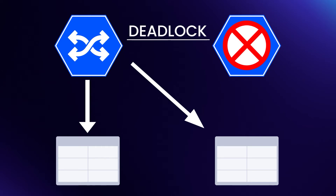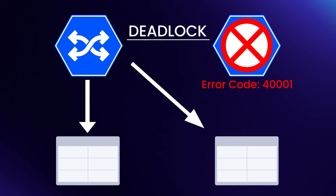The failed transaction is given a specific error code of 400001, which indicates a retryable error. The transaction is considered retryable because, once the contention is eliminated, executing the transaction again should succeed.